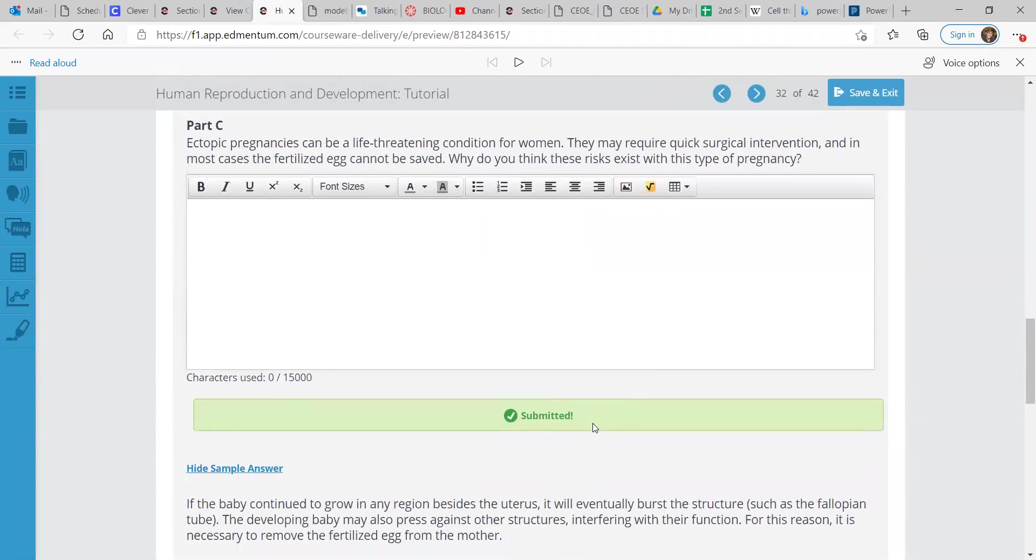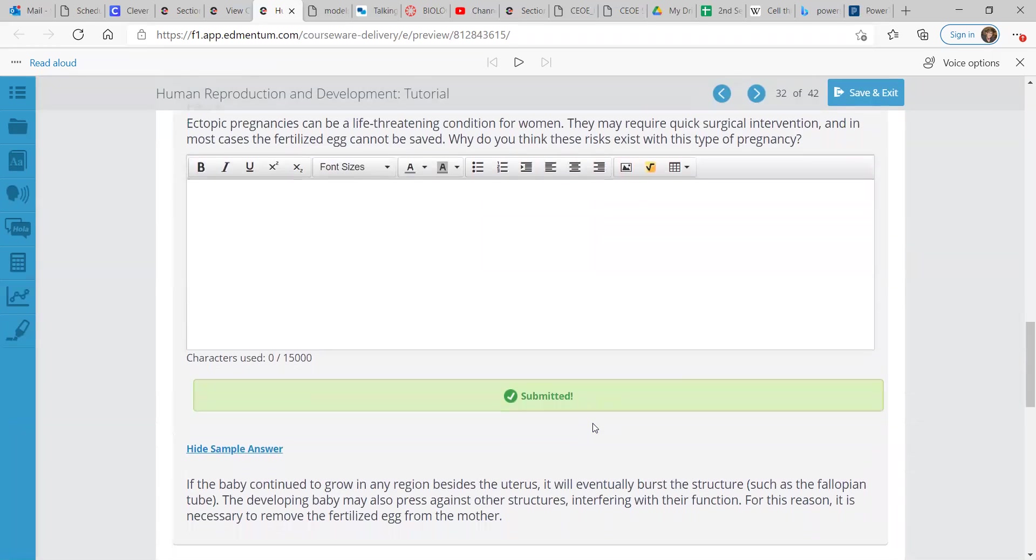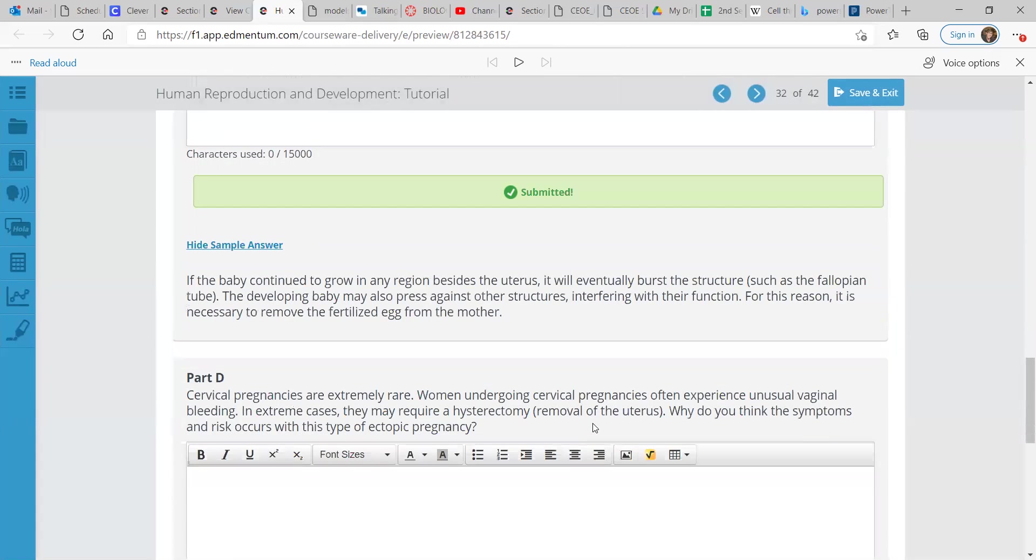Part C. This can be life-threatening for women and they may require quick surgical intervention. And in most cases, the fertilized egg cannot be saved. Why do you think these risks exist with this type of pregnancy? If the baby continued to grow in any region besides the uterus, it will eventually burst the structure, such as the fallopian tube. The developing baby may also press against other structures, interfering with their function. For this reason, it is necessary to remove the fertilized egg from the mother.